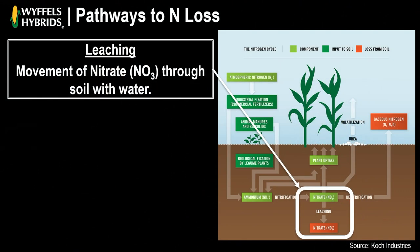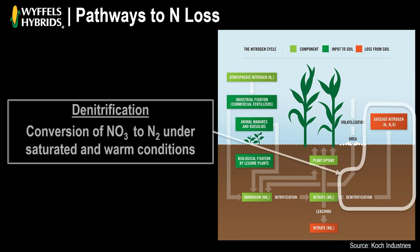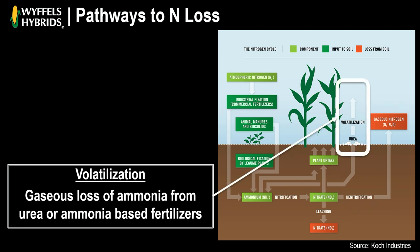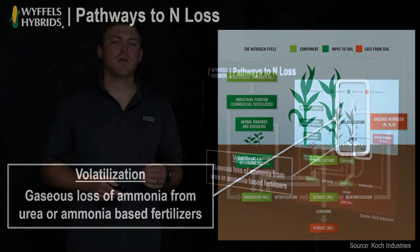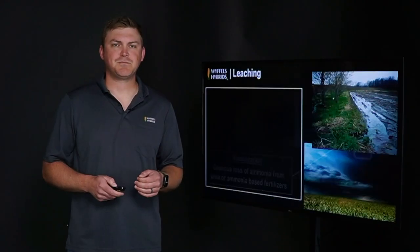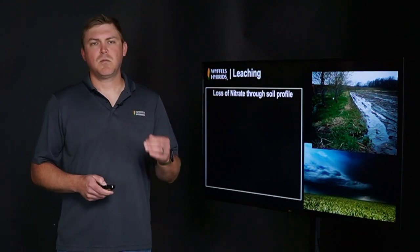Leaching is the movement of nitrate through the soil with water. Second is denitrification — that's the conversion of nitrate to dinitrogen, which typically happens under saturated and warm or flooded conditions. The last one is volatilization, which is the gaseous loss of ammonia from urea or ammonia-based fertilizers.